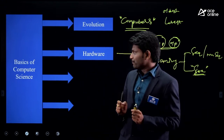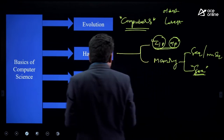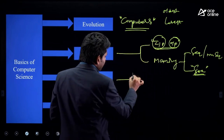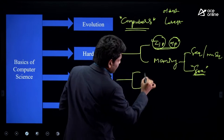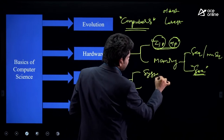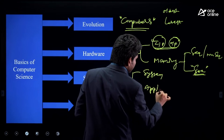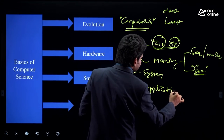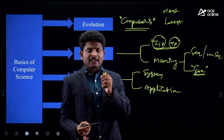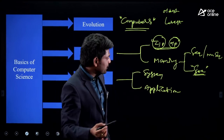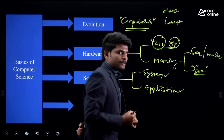The third topic is software. The major question they ask is the type of software — mainly classified as system software and application software. They simply give you a software name, and based on its usage, you should classify whether it is system software or application software.